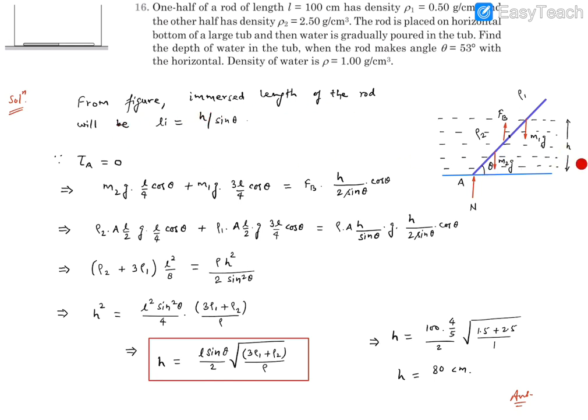The immersed length of the rod is going to be L_i. If we consider this perpendicular distance h, then with angle θ, you'll find h by sin θ. h by sin θ is going to be this immersed length.